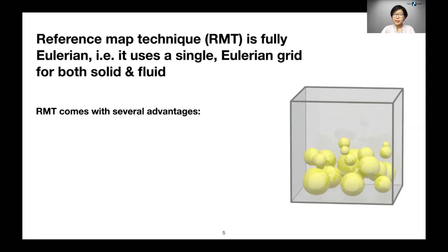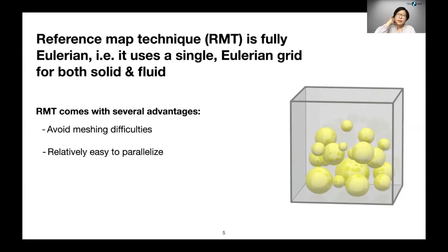The reference map technique offers a different solution. It's mathematically formulated to be fully Eulerian. That means it uses a single Eulerian grid for both solid and fluids. Doing so comes with several advantages. First, on an Eulerian grid, we avoid meshing difficulties that are common in Lagrangian type methods. There are also many techniques that can be applied to parallelize a method that's on a fixed grid.